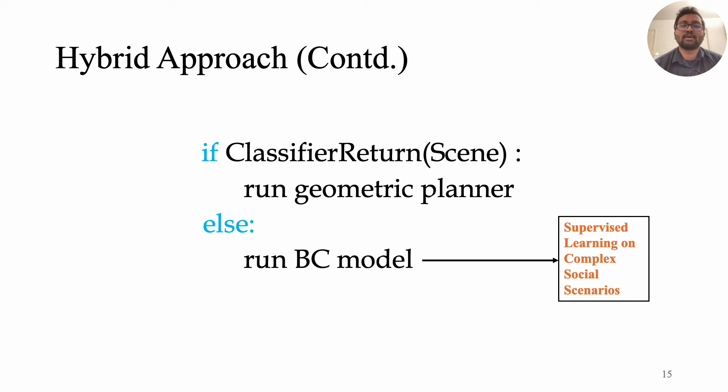Given a scenario, we then query the classifier. If it returns positive, which means it's a trivial scenario and can be handled by classical planner. If it returns negative, which means the scenario is more complex and switches to a behavior cloning model for further navigation. The BC model is trained in a supervised manner to tackle complex social scenarios.